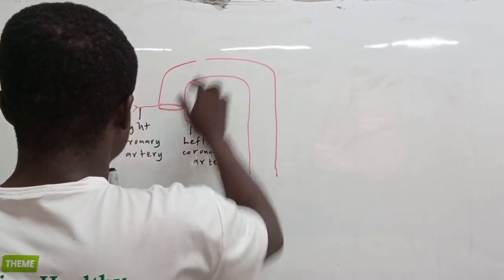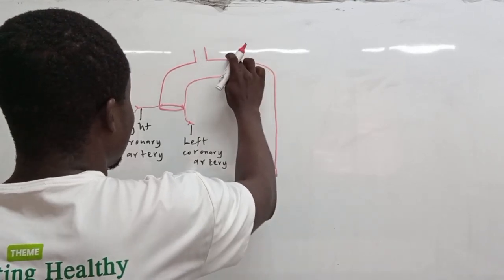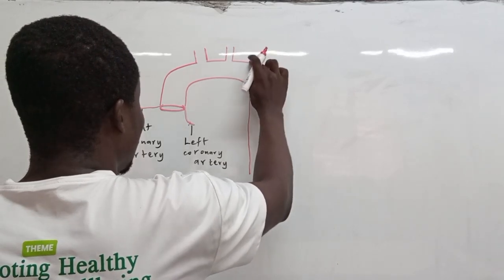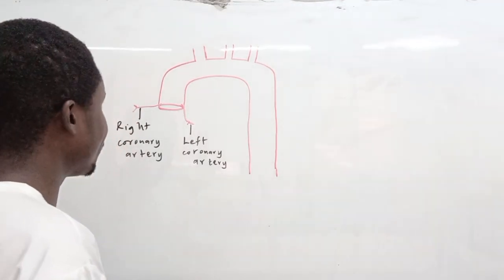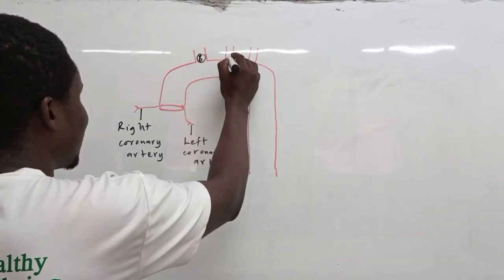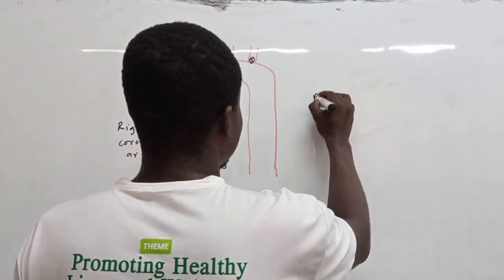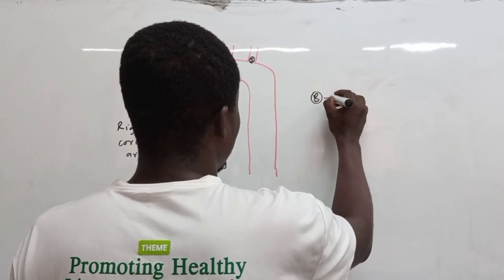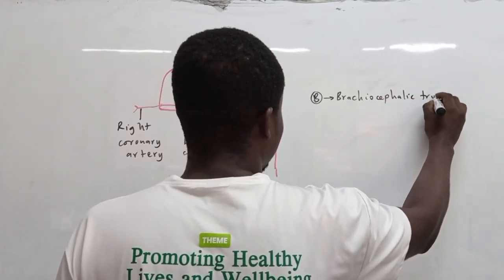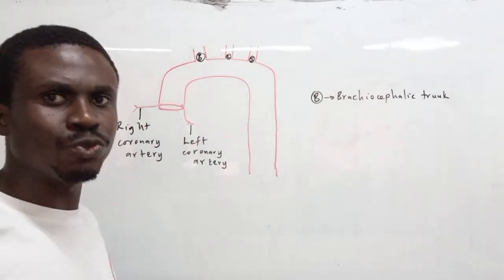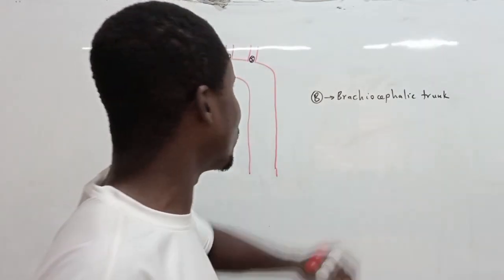From right to left, the arch gives us three branches: B, C, and S — BCS. The B is the brachiocephalic trunk. In anatomy, when we talk about a trunk, it is typically a short vessel that quickly divides. So we have this brachiocephalic trunk on the right side.